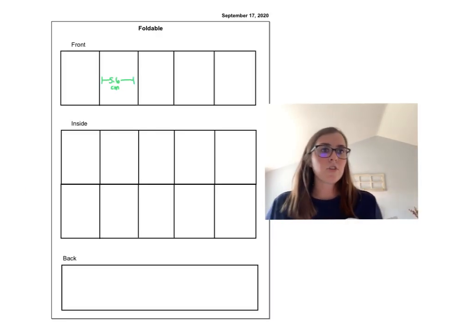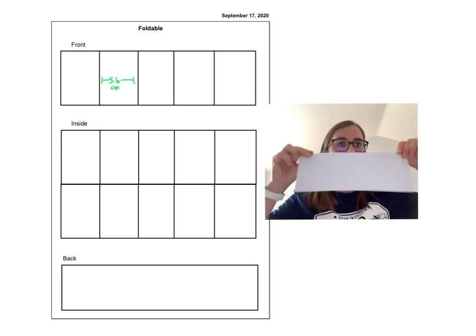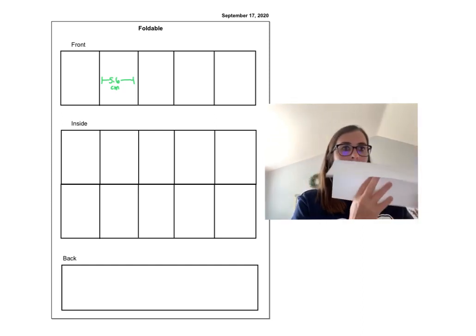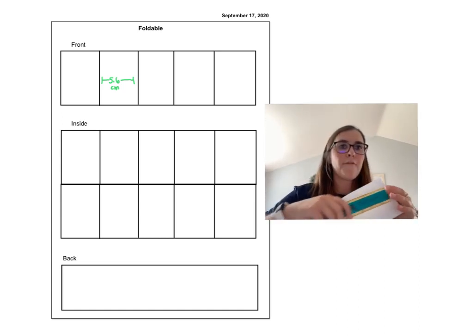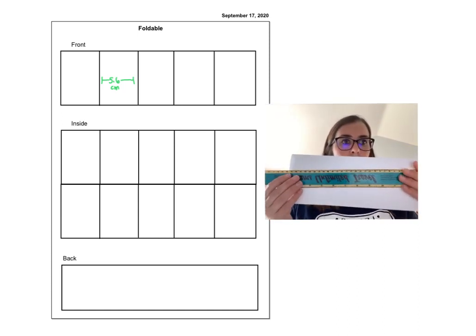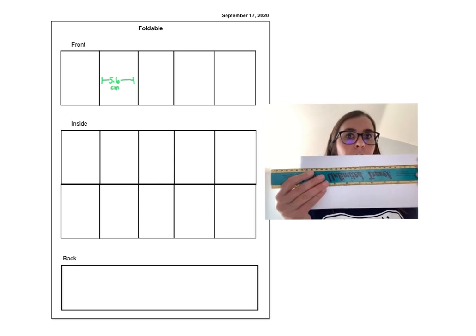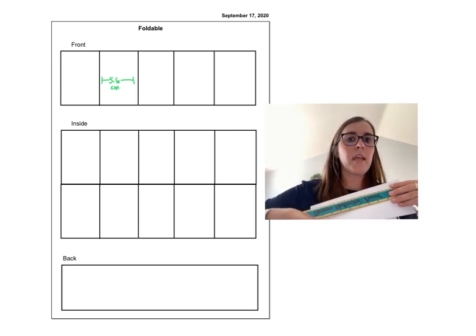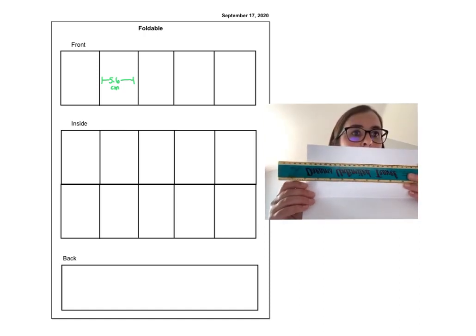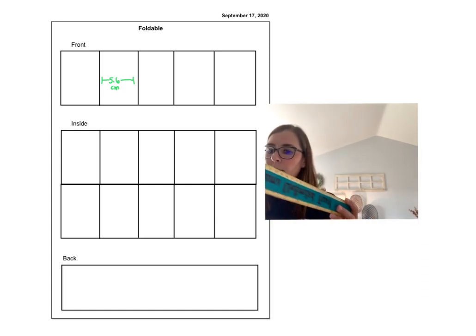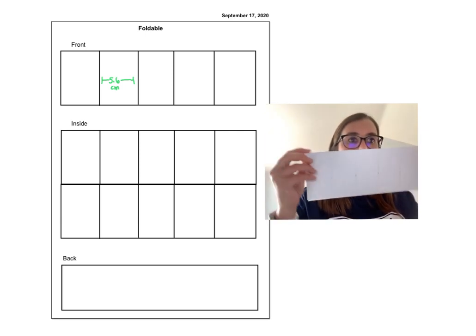We are going to make a foldable. So you should find a piece of computer paper and I want you to fold it Chicago hot dog style. Then you're going to draw four lines across the front, and the lines can be 5.6 centimeters apart. If you make them 5.6 centimeters, it will fit perfectly. You can do the same thing on the inside as well. So once it's done, your front should look something like this with your lines 5.6 centimeters apart. Your back won't have anything on it, we'll save that for later.